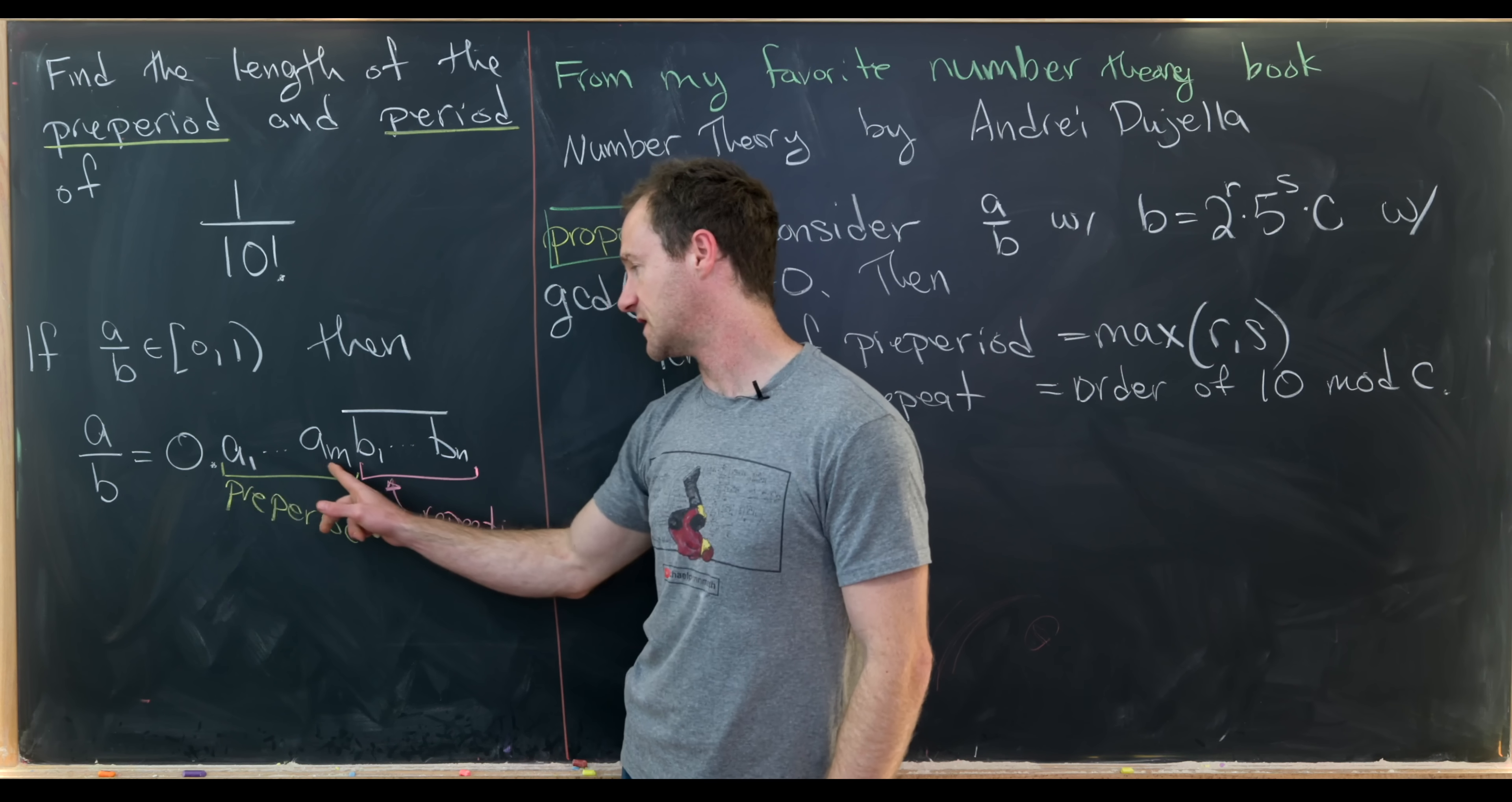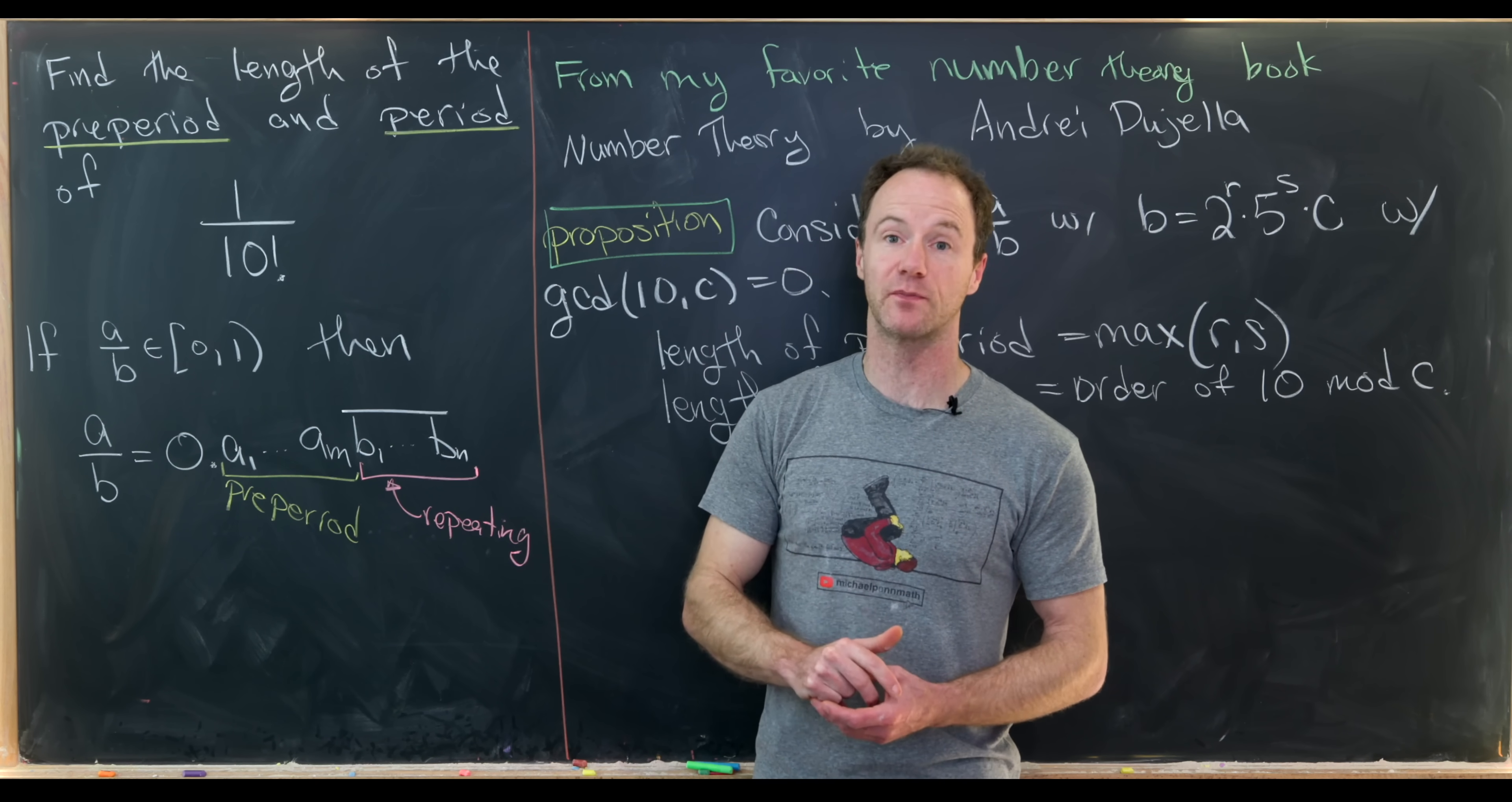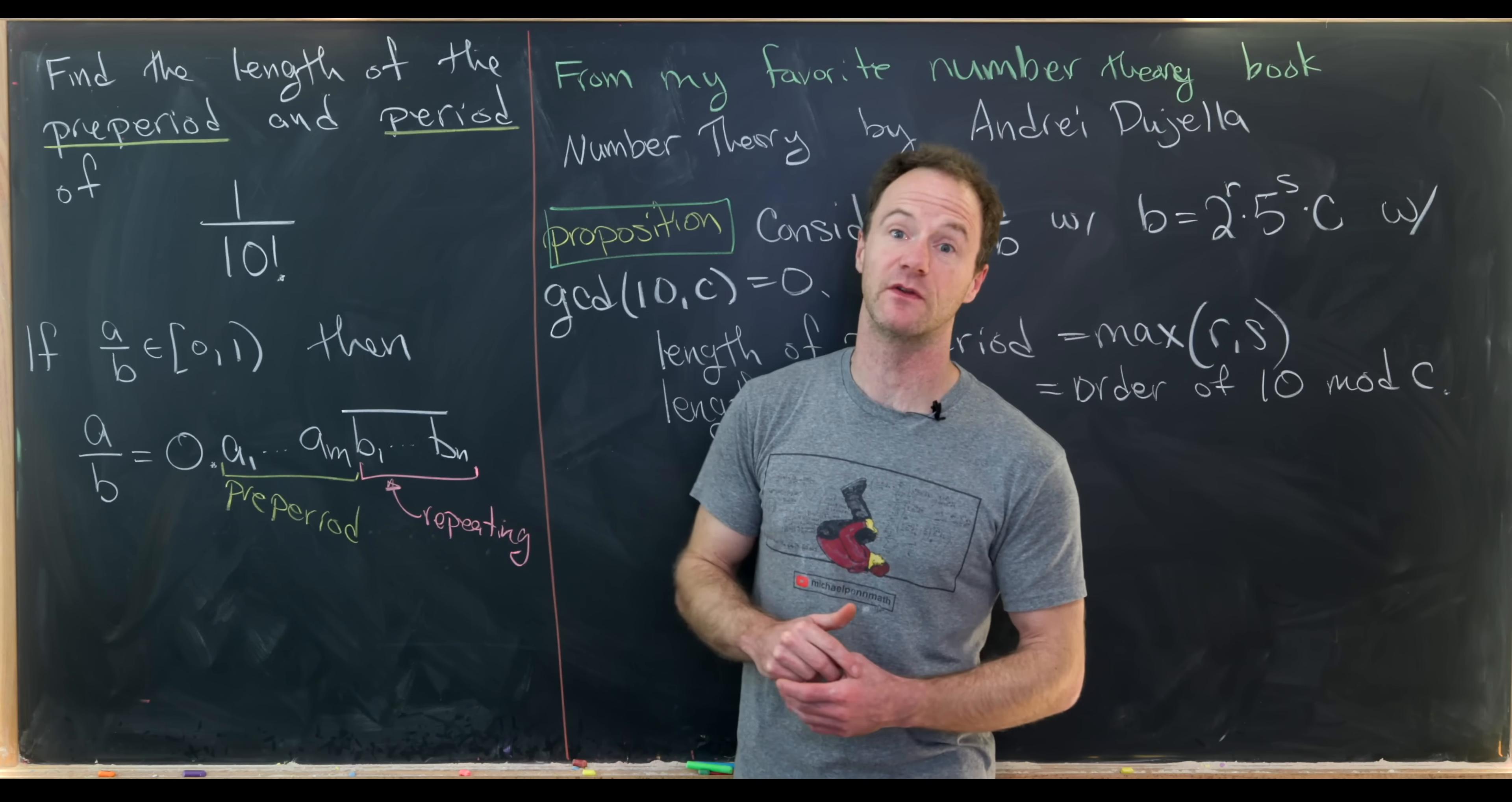So all of this does not repeat, but from here on out it repeats in chunks that are n digits long each time. So this bit at the beginning, the digits a1 through am, is called the pre-period. So we would say that this has a pre-period of length m, but then this repeating portion is of length n. So maybe we would call that the length of the period.